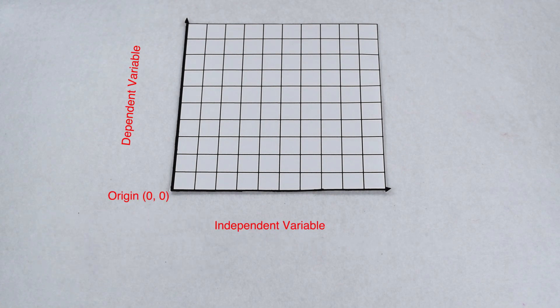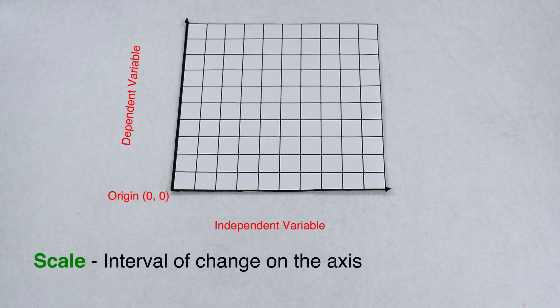When we are gathering data, we are typically looking for a change in our dependent variable. Before we can finish our graph, we need to have a scale for our x axis and our y axis. A scale is an interval that we count by.